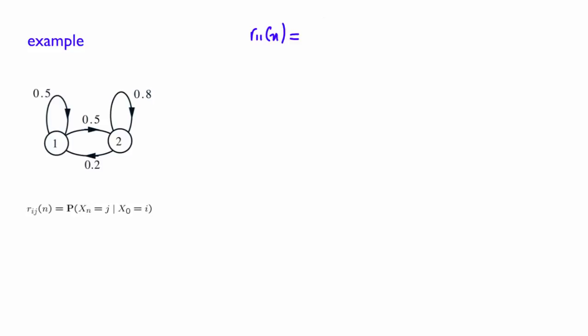That probability can happen in two ways. After n-1 steps, you end up in state 1, and then for the last transition, you stay in state 1, or after the first n-1 transition, you end up in state 2, and then you transition back to state 1.